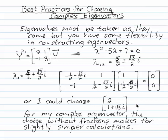You can play with the eigenvector — any multiple of an eigenvector will do. You cannot change the eigenvalue. You cannot say, I don't like 5 over 2 plus root 3 over 2i, so I'll change it to 5 plus root 3i. You can choose eigenvectors. You cannot choose eigenvalues. You have to take those the way they come.